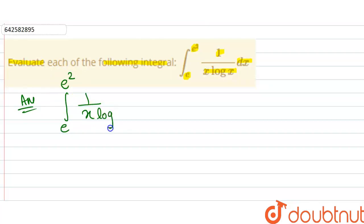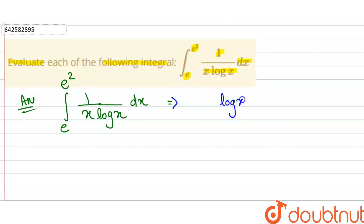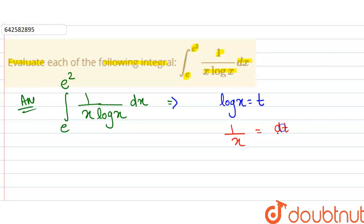We have the integral of 1/(x·log x) dx. To solve this, we assume log x = t. Differentiating both sides with respect to x, we get 1/x = dt/dx.